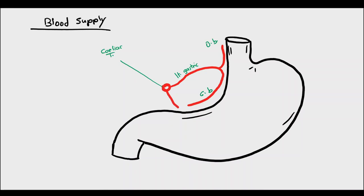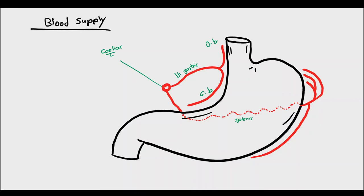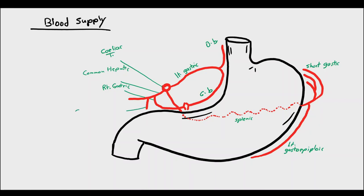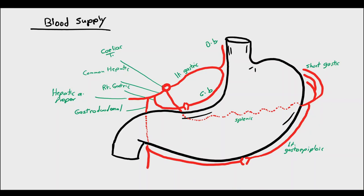The second branch of the celiac trunk is the splenic artery, which passes behind the stomach on the upper border of the pancreas in a tortuous course. Before it ends in the splenic hilum, it gives off the left gastroepiploic artery along the greater curvature of the stomach and the short gastric arteries. The third branch of the celiac trunk is the common hepatic artery, which gives off the right gastric artery along the lesser curvature of the stomach. Then it divides into the gastroduodenal artery and the hepatic artery proper to the liver. The gastroduodenal artery passes behind the first part of the duodenum and branches into the right gastroepiploic artery along the greater curvature of the stomach, then ends as the superior pancreaticoduodenal artery.